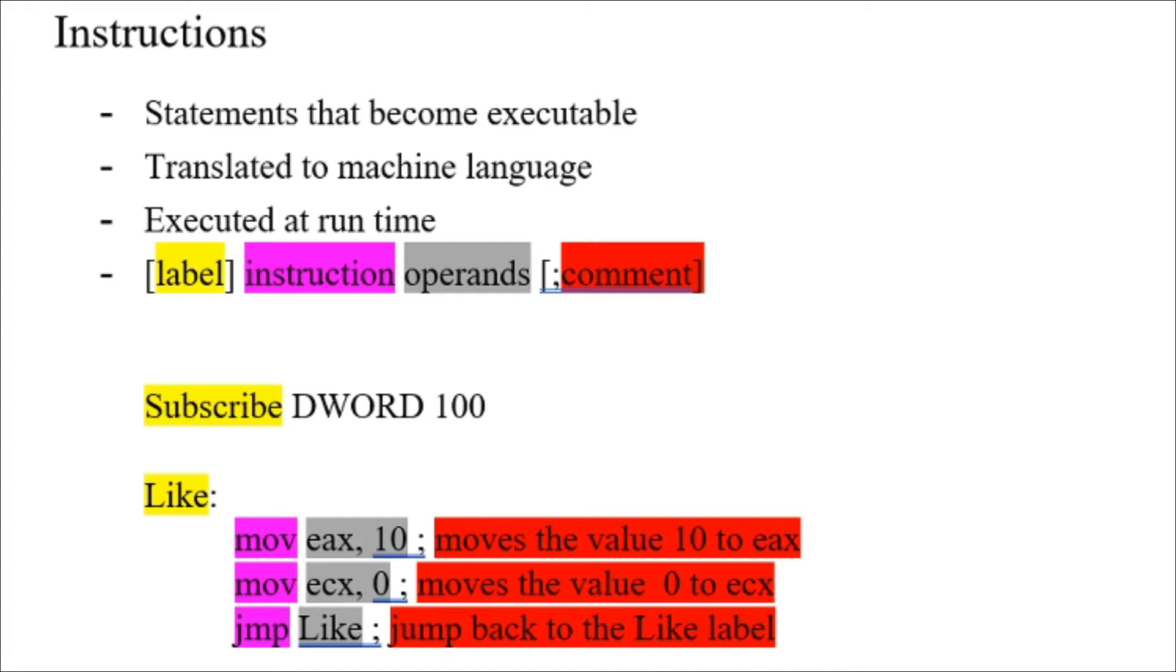The first one is the data label, and the second one is the code label. An example of a data label is Subscribe. Subscribe is a label for a double word or DWORD that has a value of 100.